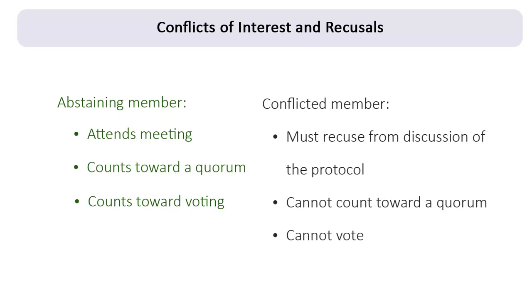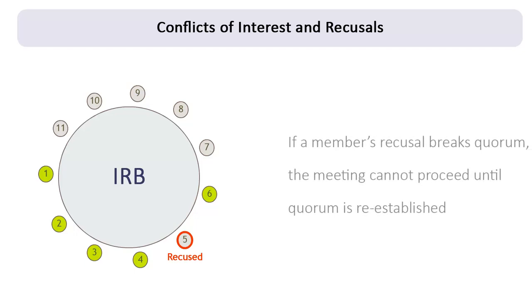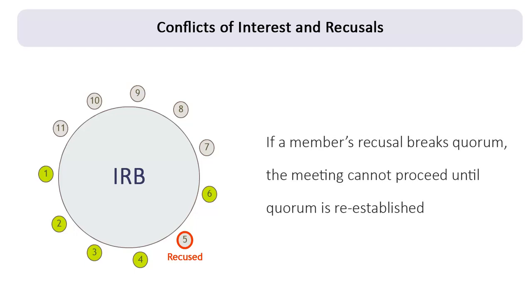Recusal, on the other hand, has the same effect as if the member were not in attendance. The recused member does not count toward quorum or any vote calculations. If a member's recusal breaks the quorum, the IRB cannot proceed with review or voting as it pertains to the affected protocol or protocols. When this occurs, the meeting cannot proceed until a quorum is re-established.